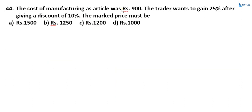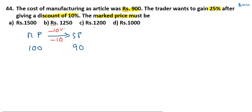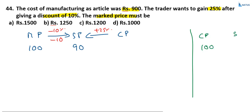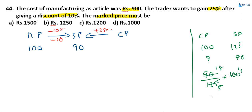The cost of manufacturing of an article is 900. A trader wants to gain 25% after giving a discount of 10%. What must the market price be? Let market price equal 100. With a 10% discount, selling price equals 90. For 25% profit with cost price at 100, selling price is 125. So cost price equals 90 by 125 into 100, which is 72. This means selling price 90 equals cost price 72 plus 25% of 72 equals 18, giving 90.